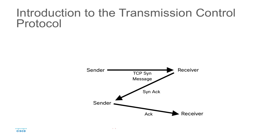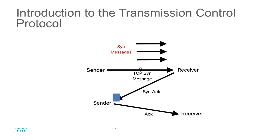One common attack that capitalizes on the way TCP is intended to function is that an attacker will send multiple SYN messages — flooding with a whole bunch of SYN messages — and spoof the source address, so that when the receiver sends the SYN-ACK, it goes nowhere, to an unused address. If enough SYN messages are sent, the receiver uses all its resources sending SYN-ACK messages and never hears back. It consumes all the resources, and legitimate connections cannot be established. This is one example of using the protocol against itself.